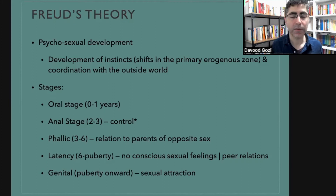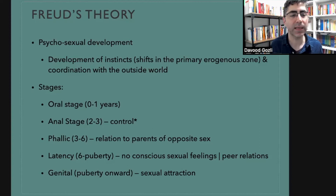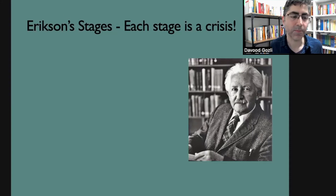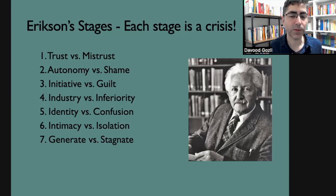Freud's theory ends around puberty or in late adolescence — at most early adulthood. In response to that limitation, Erikson proposed his own stage model of development, one advantage of which is that it goes all the way to old age and has eight stages instead of four.